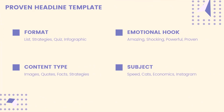Here is the proven headline template. Your titles should satisfy four criteria. Number one is the format — is it going to be a list, strategies, a quiz, an infographic? It also has to have an emotional hook: words like amazing, shocking, powerful, proven. Then there's the content type — does the article contain images, code, facts, or strategies? And then you have the actual subject — it could be speed, cats, economics, or Instagram. If your headline satisfies these four criteria, you are all set.